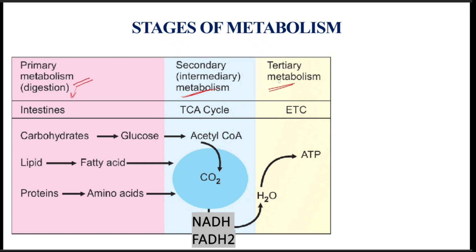and then tertiary metabolism. In primary metabolism, the macromolecules like carbohydrates, lipids, and proteins are digested into their corresponding smaller units: carbohydrate is broken down into glucose, lipid into fatty acids, and proteins into amino acids. These smaller components are absorbed and oxidized by entering into the